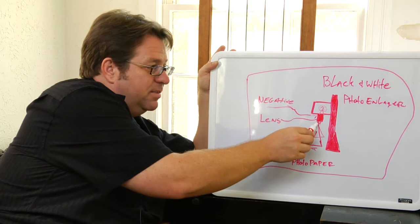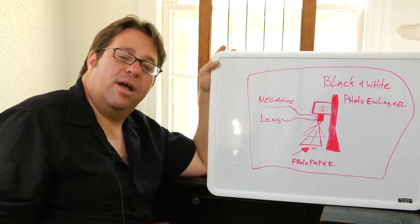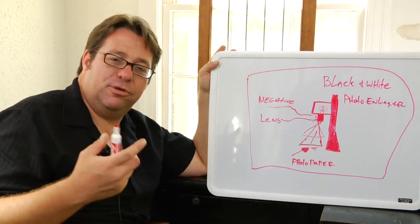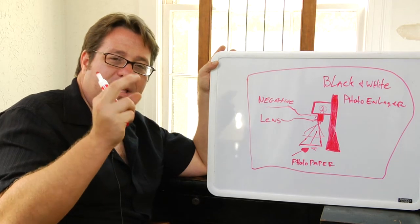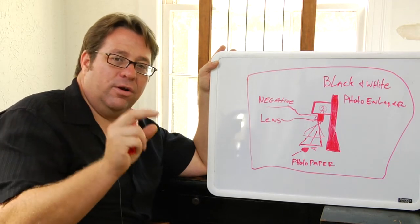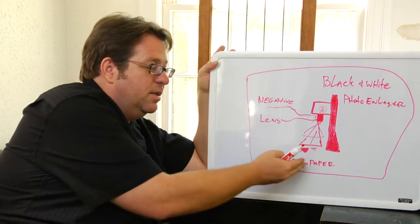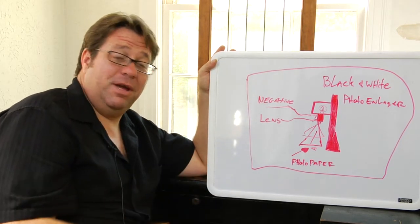Now the enlarger also has f-stops on the lens just like your camera has f-stops. But these f-stops are for projection and they're able to make the image lighter and darker according to the exposure you need to make a proper exposure on your paper.